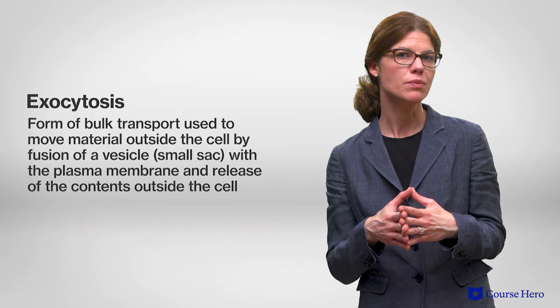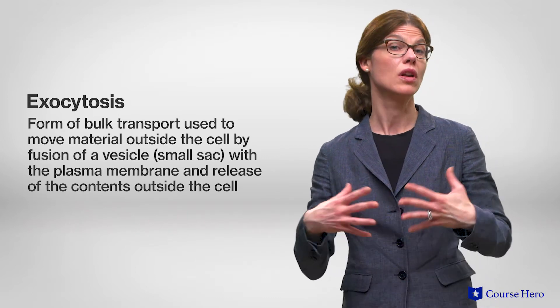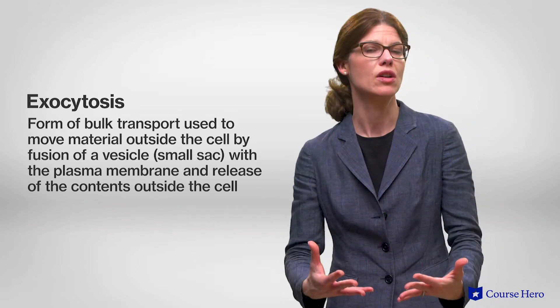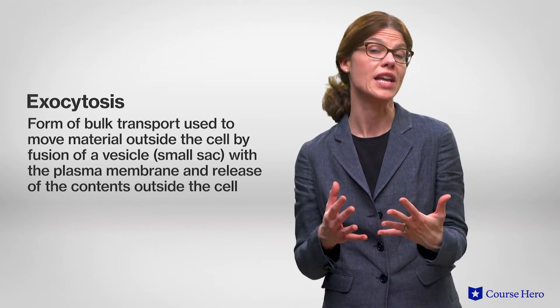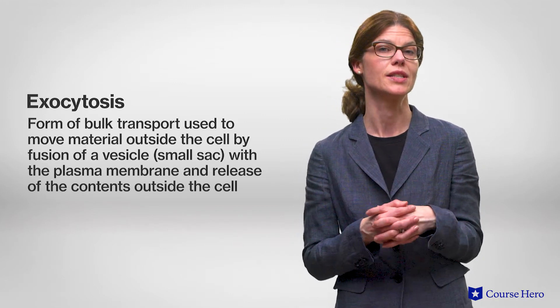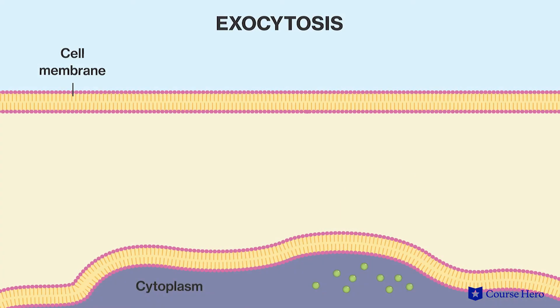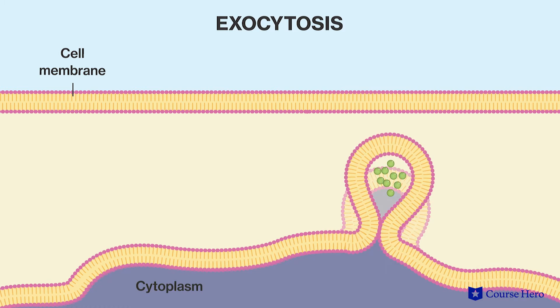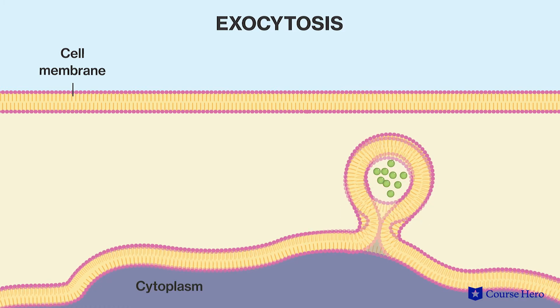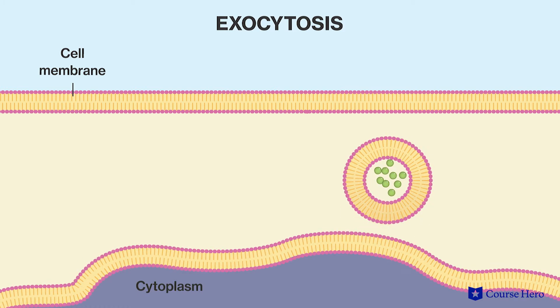Exocytosis is a form of bulk transport used to move large molecules to the outside of the cell. This can be thought of as a reverse process of endocytosis. Exocytosis involves expelling a substance from the cell into the extracellular fluid, first by enclosing the material in an intracellular vesicle that buds from a membrane-bound structure, such as the Golgi apparatus.